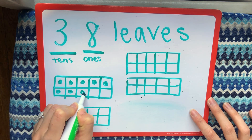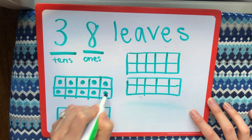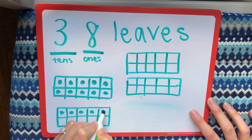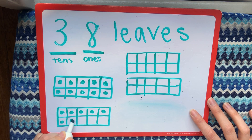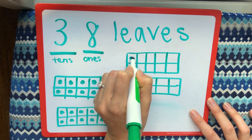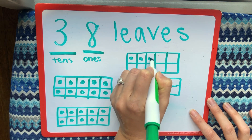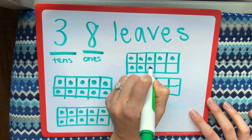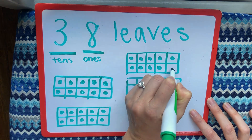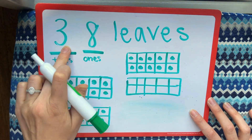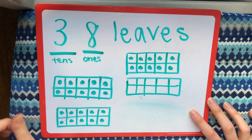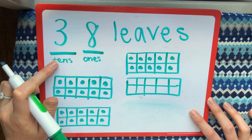Filling in the ten frames — continuing from where we left off: 7, 8, 9, 10, 11, 12, 13, 14, 15, 16, 17, 18, 19, 20, 21, 22, 23, 24, 25, 26, 27, 28, 29, 30. So I have 30 so far — 3 full tens frames because I have 3 groups of 10.